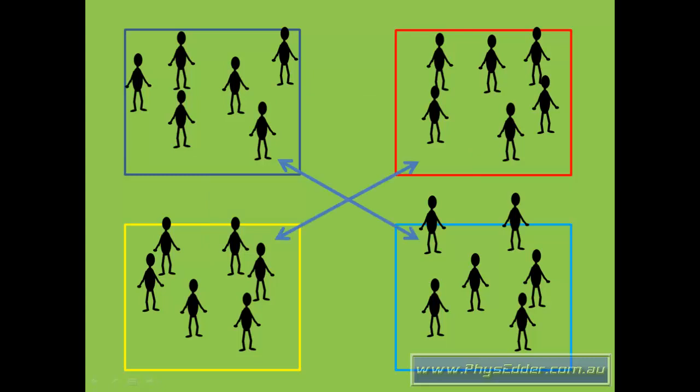Or you can have them kicking on the diagonal, so the yellow are taking on the red, and the dark blues are taking on the light blues. Or if you want, you can actually have a free-for-all where you don't tell them who they're playing, and they can basically kick the balls in whatever direction they want to kick them.